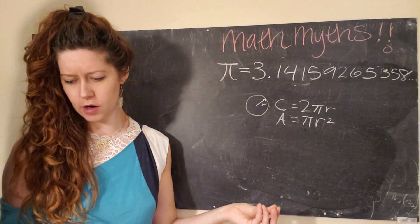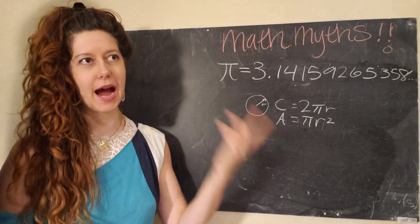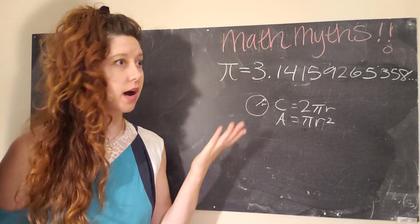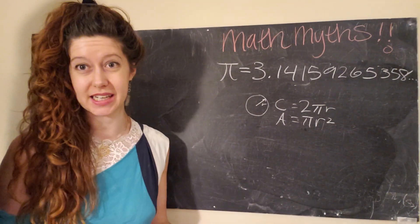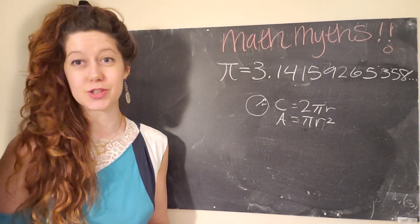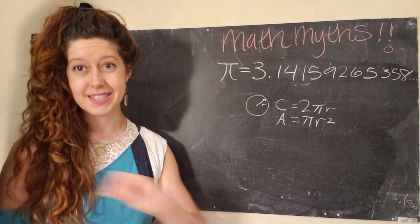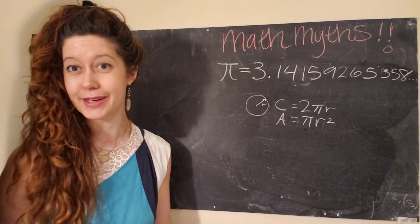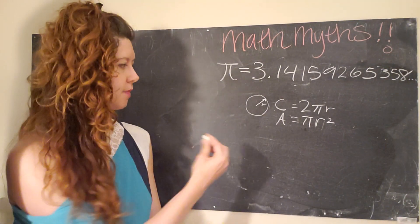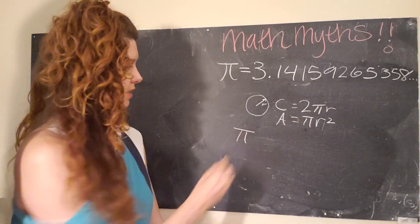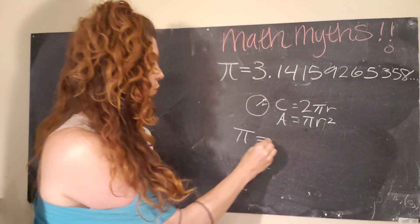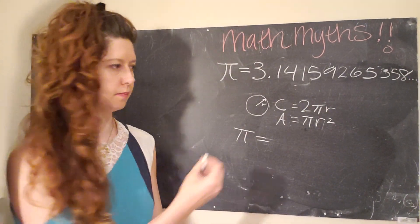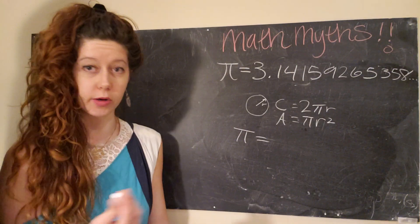And so right off the bat, that basically nixes the second part of our myth, which was, can pi contain some other constant like e? And well, the answer is no. An irrational number cannot contain any other irrational number because then it would not be an irrational number. So to think about it, it kind of helps to write down a little equation. So basically, if we were to say that pi contained the irrational number e, also a constant, Euler's number,